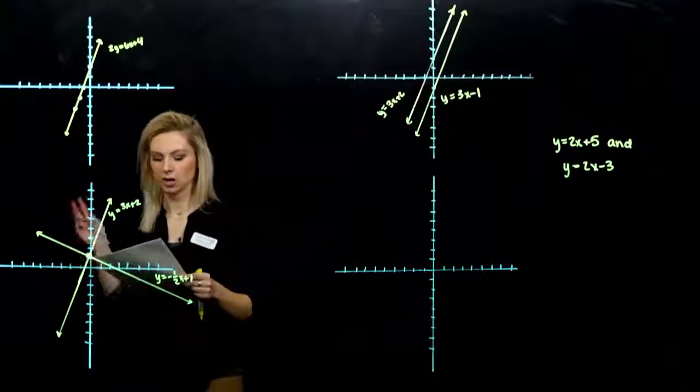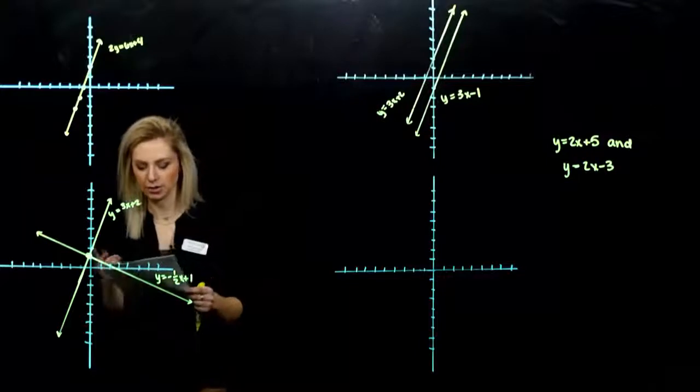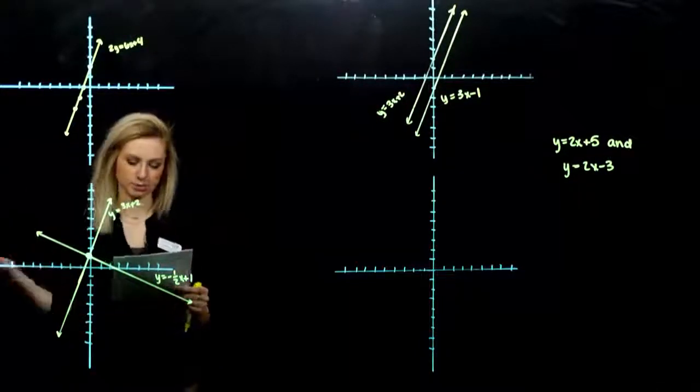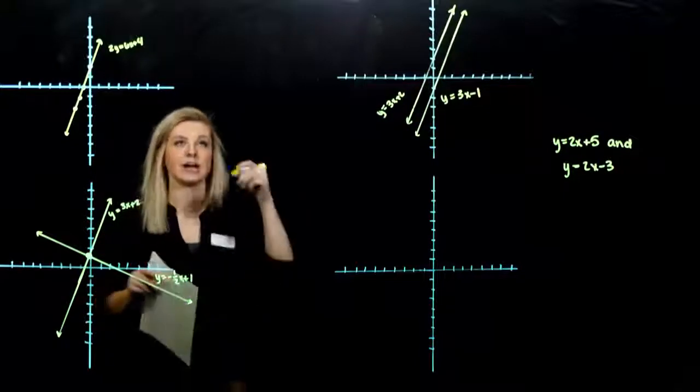So the first few cases that we want to talk about. Three different possibilities when we're graphing a pair of linear equations. So two, in this case, we could look at more. Three different options. First one, the graphs are exactly the same.